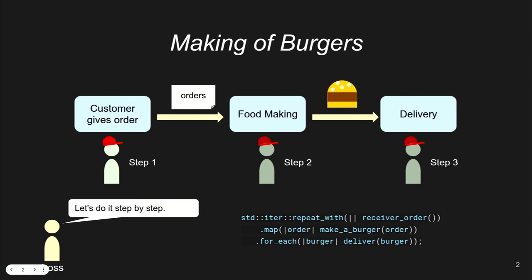Based on this idea, I wanted to use Rust's Async to design a framework. The main problem this framework addresses is handling large data flows by splitting the process into many steps. I'll use a restaurant analogy: making a hamburger. The work can be divided into stages — first the customer places an order, then the kitchen prepares the food, and finally someone delivers it to the customer.